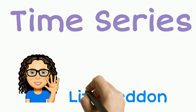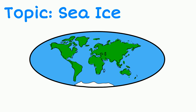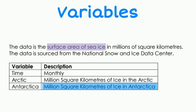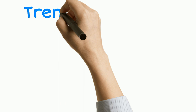Hi, I'm Liz Sneddon and we're about to have a look at the time series topic and making hypotheses. The topic we're going to explore is sea ice, and in particular looking at the ice in Antarctica. The variable we're going to investigate is the surface area of sea ice, measured in millions of square kilometres, and note that the data we're looking at is collected monthly.